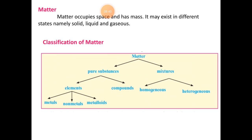Pure substances have a definite chemical composition — wherever you take them from, their composition will always be the same. There are no changes in it. Its chemical properties and physical properties will appear the same wherever you take it from — its properties are always the same. That is what we call a pure substance. For example, a pure metal is an example of pure substance; distilled water also has a composition that does not change — that is also one of the pure substances.